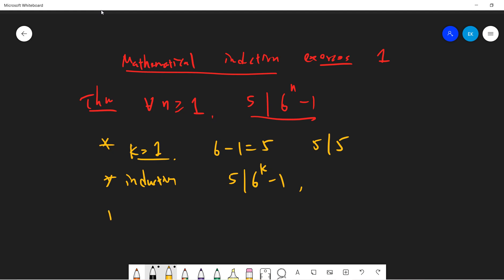Now, how about k plus 1? So we have, we will have 6 to the k plus 1 minus 1. I can write it as 6 to the k times 6 minus 1.